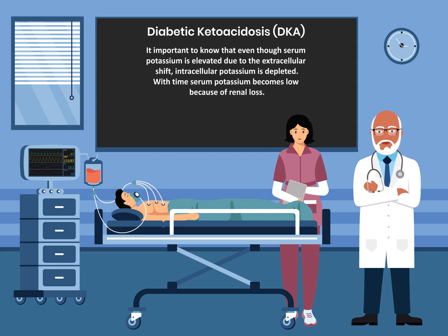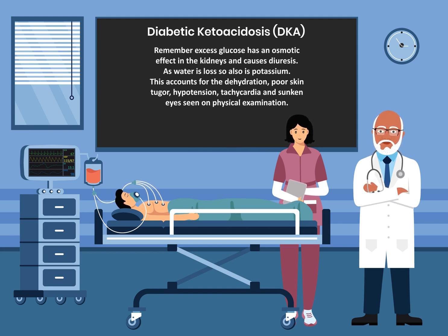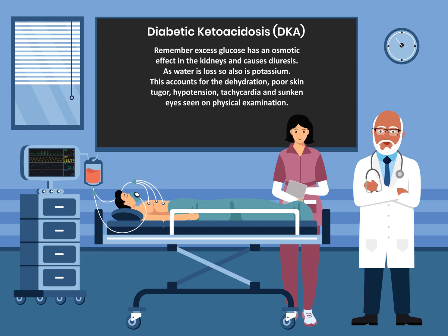It is important to know that even though serum potassium is elevated due to the extracellular shift, intracellular potassium is depleted. With time, serum potassium becomes low because of renal loss. Remember, excess glucose has an osmotic effect in the kidney and causes diuresis. As water is lost, so also is potassium. This accounts for the dehydration, poor skin turgor, hypotension, tachycardia, and sunken eyes seen on physical examination.